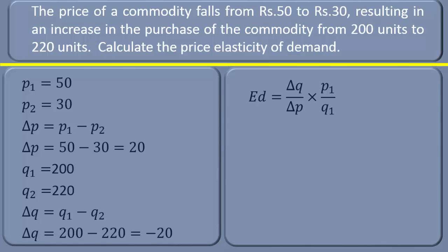Now this is the formula that we are going to use. Elasticity of demand equals Δq divided by Δp, multiplied by initial price divided by initial quantity.